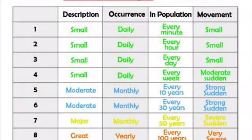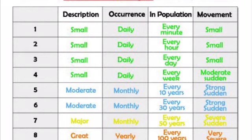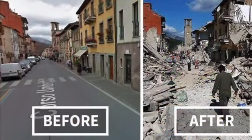The magnitude of an earthquake is measured on the Richter scale, developed by Charles Francis Richter. The scale has markings from 0 to 9. Earthquakes are classified based on the scale reading: 0 to 2 is unnoticed; 2 to 4 can be felt but is not damaging; 4 to 6 is moderate; 6 to 8 is severe; and 8 to 9 is very severe.